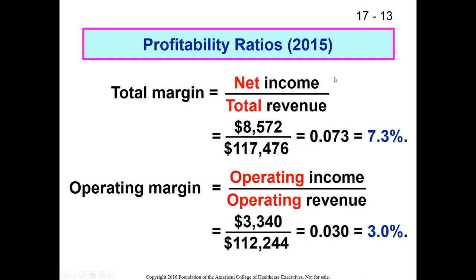Total margin does tell you something important about overall organizational health. But operating margin is more useful when trying to assess whether the management team is doing a good job and whether the organization has long-term sustainability, because it focuses on the things management can actually control.